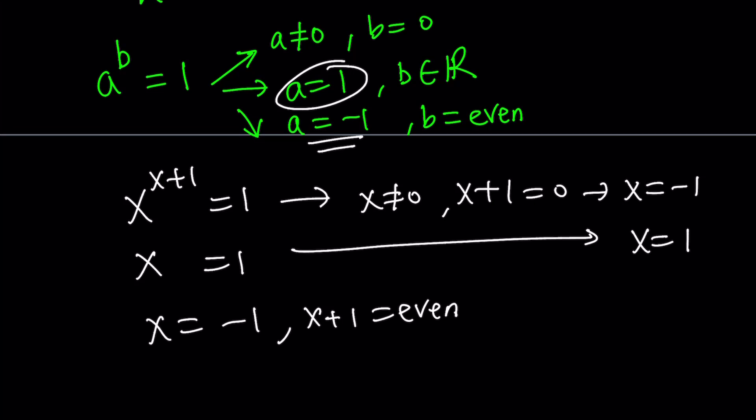So when x is negative 1, x plus 1 becomes 0. So 0 is an even number. In case you didn't know, some people don't believe that. When we say 0 is even, really? Are you serious? Yeah, it's even. So x equals negative 1 is the other possibility. But we already talked about it. We got x equals negative 1. So there are two solutions.